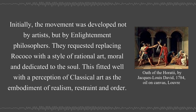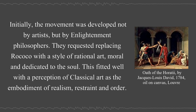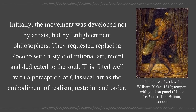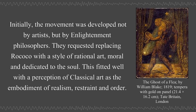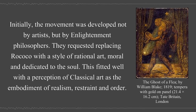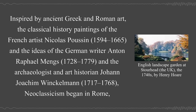Initially, the movement was developed not by artists but by Enlightenment philosophers. They requested replacing Rococo with a style of rational art, moral and dedicated to the soul. This fitted well with a perception of classical art as the embodiment of realism, restraint, and order. Inspired by ancient Greek and Roman art, the classical history paintings of the French artist Nicolas Poussin, 1594–1665, played a significant role.